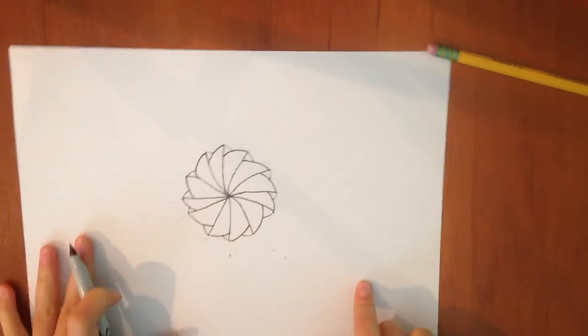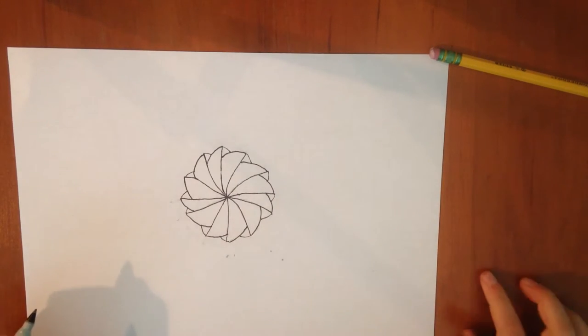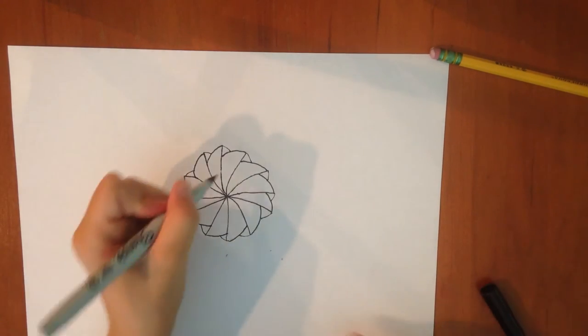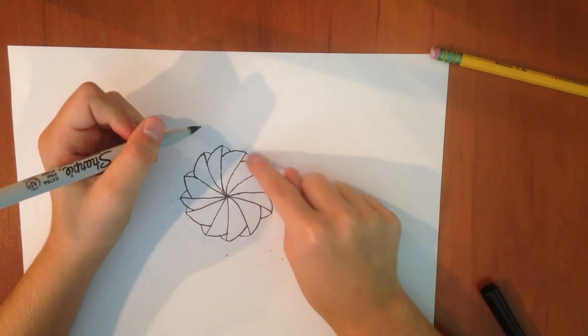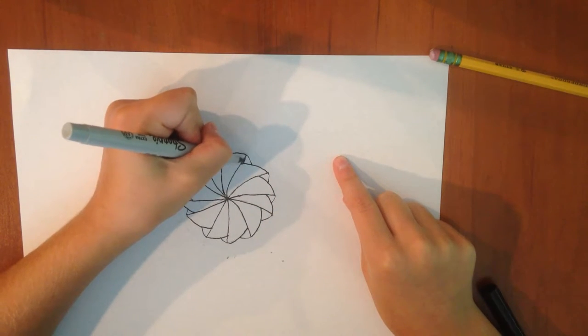Alright, see that? Oh, that looks pretty good. I'm just going to do that. Alright, now you may color in each of these little triangle things that you just created.